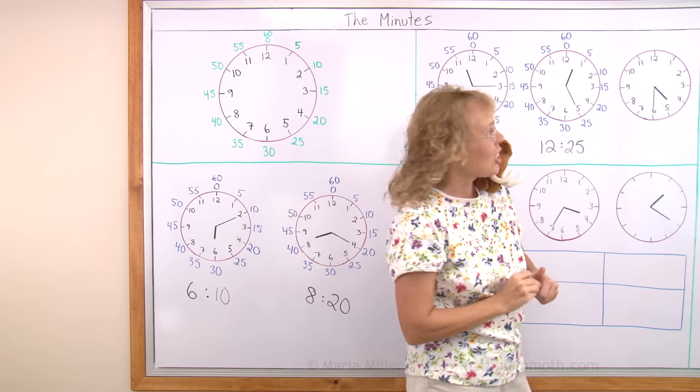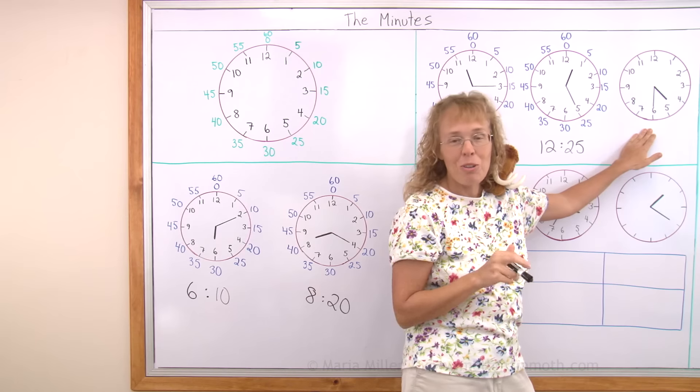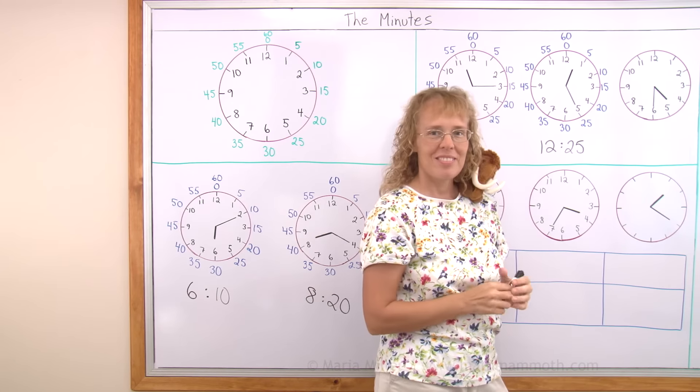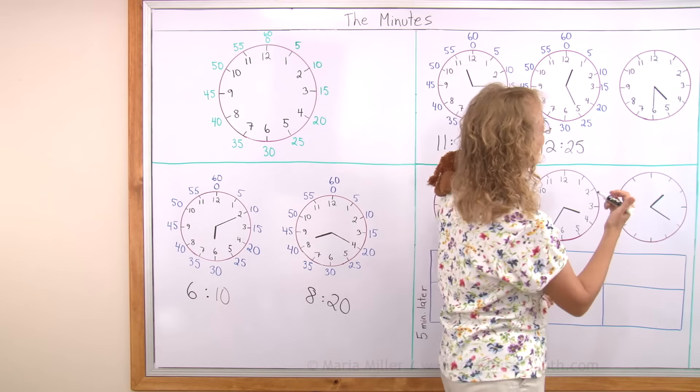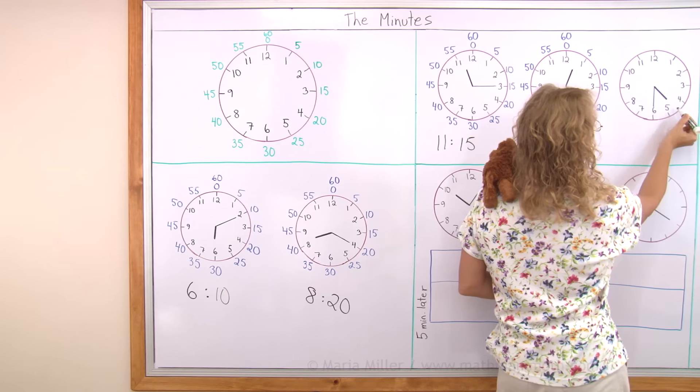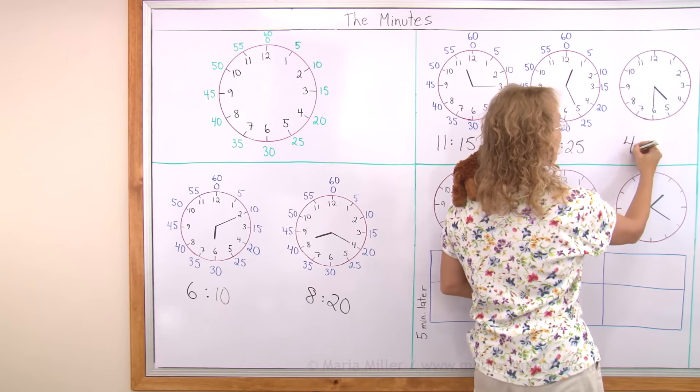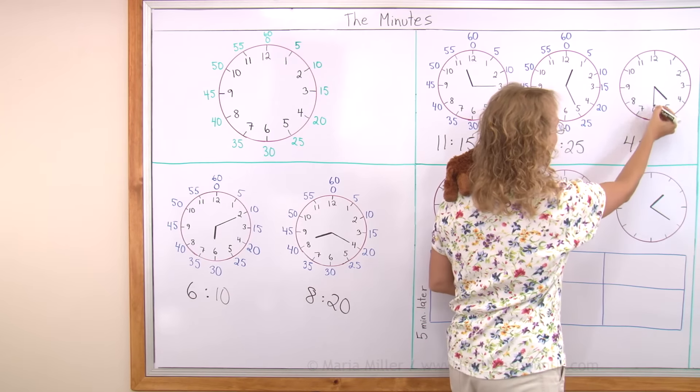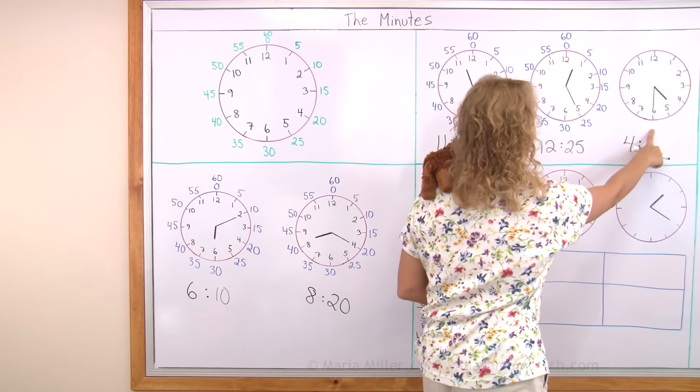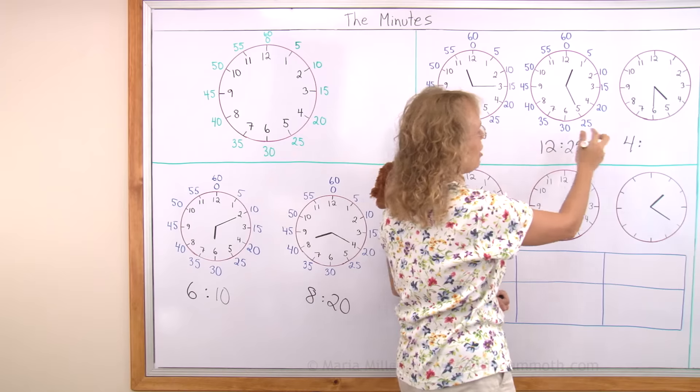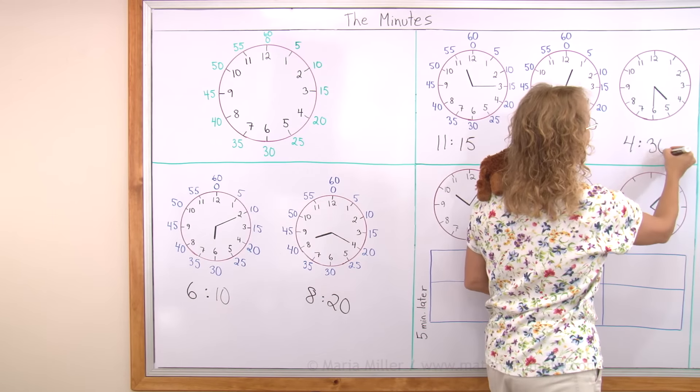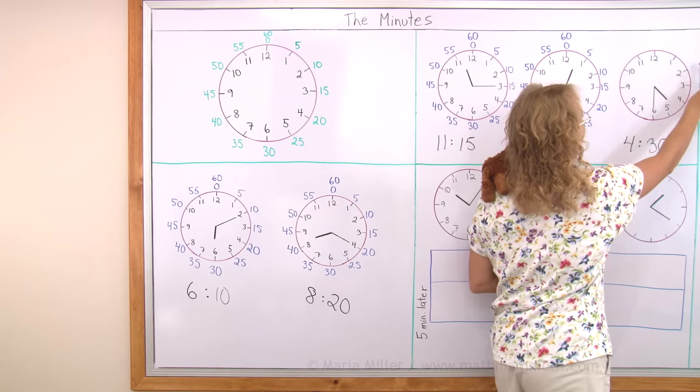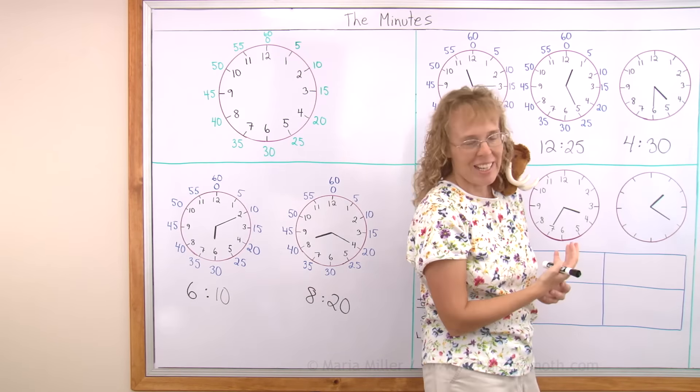And now comes the challenge. A clock that does not have all those numbers for the minute hand written out. So can you tell what time it is? The hour hand over here. It is past 4 o'clock. So we need to write 4 hours. It's not yet 5. And the minute hand points straight down. So what number would be here? Right now you can just check over here that it would be 30 minutes. But you do need to learn by heart what numbers go here on the outer rim, so to speak, for the minute hand.